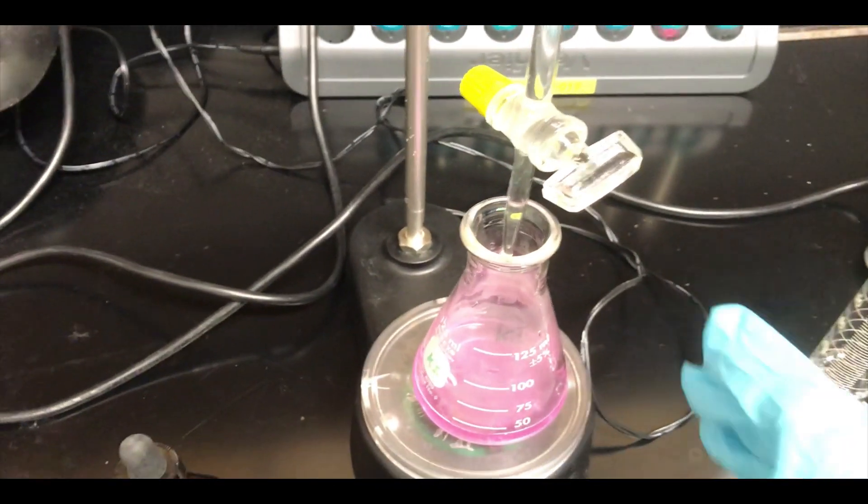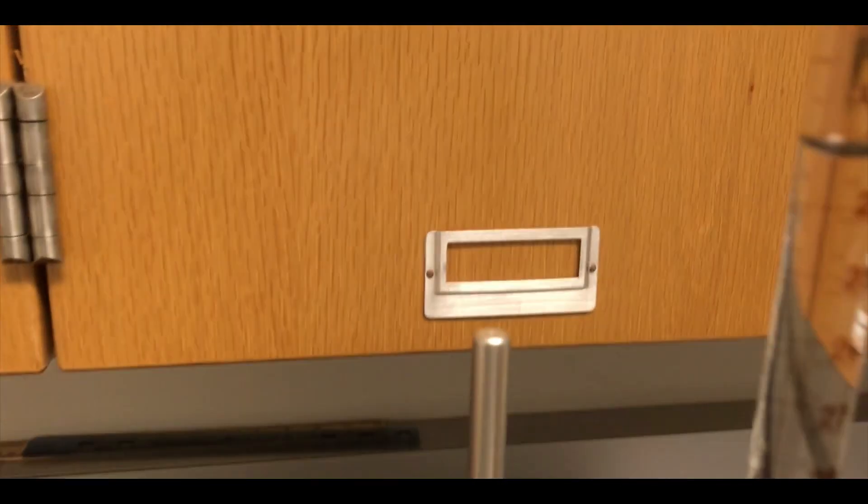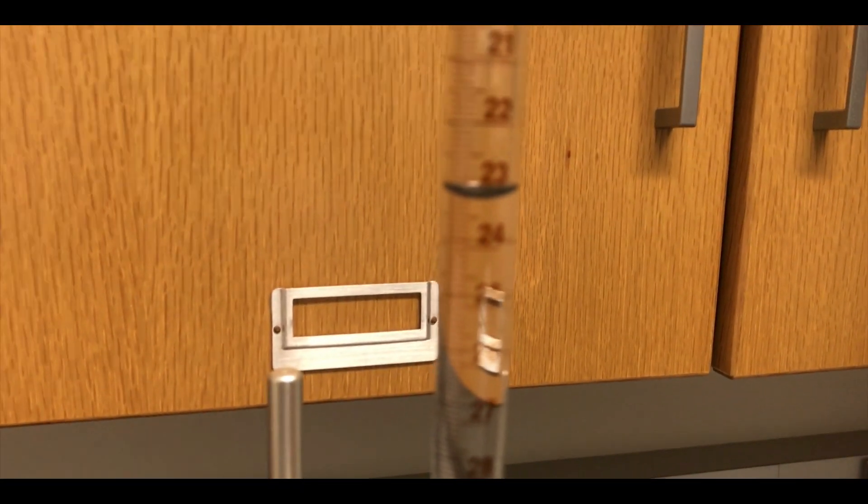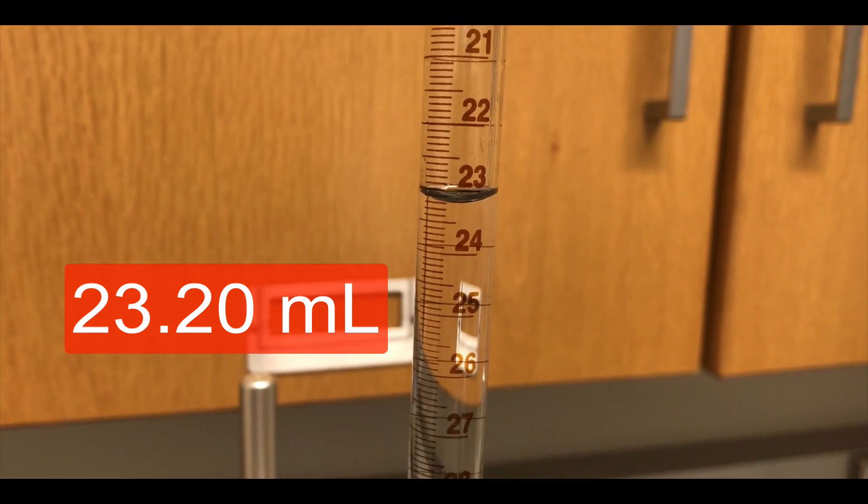So now that we've done that, let's go back up and see what our initial volume of hydrochloric acid in the burette is here. And this looks to me to be about 23.20 milliliters to start.